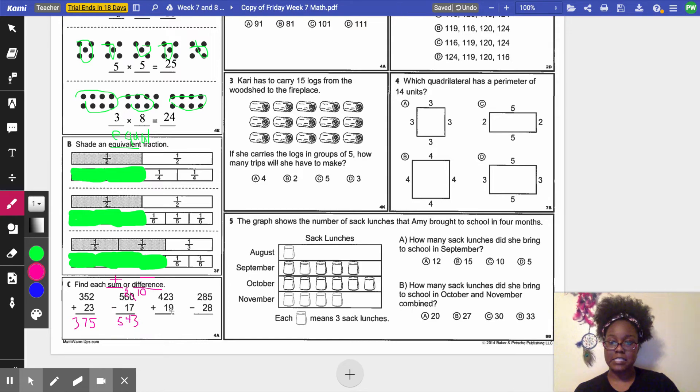On the next one, I'm finding the sum. 9 plus 3 is 12. 2 in my ones place. My 1 above my tenths place. 2 tenths plus 1 tenth is 3 tenths plus 1 more tenth is 4 tenths. And in my hundredths place, I have 4 hundredths. So my sum is 442.